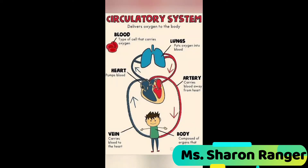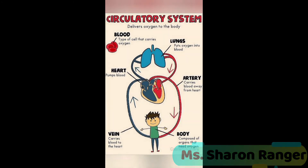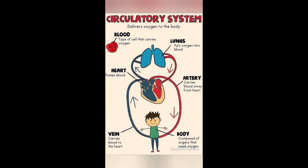Circulatory system. What is the circulatory system? The circulatory system is responsible for the circulation of blood to all parts of our body. The main parts of the circulatory system are the heart, the blood, and the blood vessels, and these play an important role in the circulatory system.